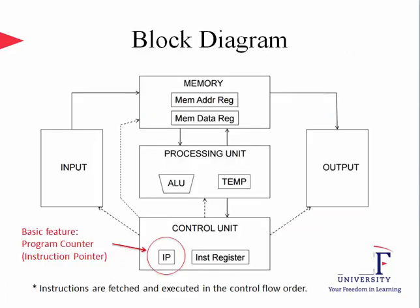Here is the block diagram of the Von Neumann model. The processing unit is in direct communication with memory, which holds both instructions and data. The control unit has an instruction register to fetch instructions, and the program counter or instruction pointer shows the next instruction to be executed. The control unit manages the processing unit, memory, and input/output devices by sending appropriate control signals. Instructions are fetched and executed in the control flow order determined by the program counter.